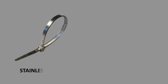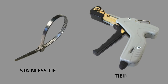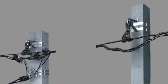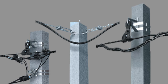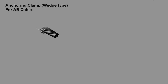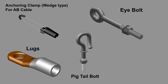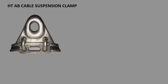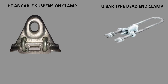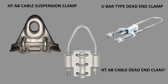Stainless tie tying tools. Anchoring clamp; high bolt lugs; big tail bolt; bi-working HT ABC suspension clamp; U-bar type dead end clamp HT ABC; dead end clamp.